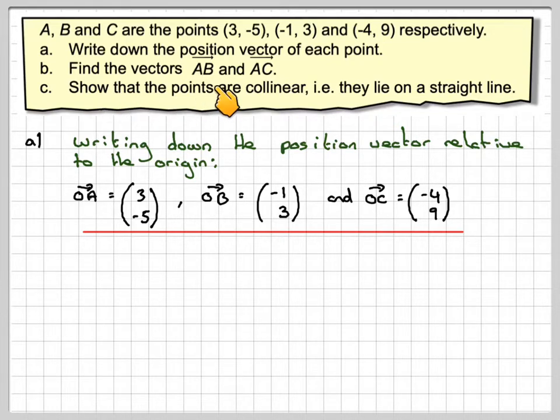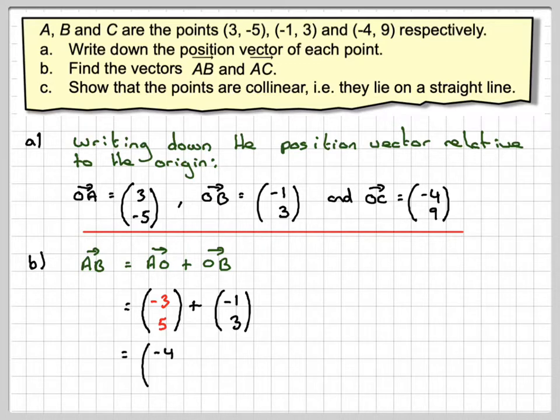Then it says find the vectors AB and AC. So AB is like doing AO + OB. We start with A here and end with B here. So we go back to the origin and then from the origin out to the next vector. If we're going back to the origin, then AO is like doing (-3, 5). And then OB, you write down exactly the same way: (-1, 3). And then you work out -3 plus -1, which is -4, and 5 plus 3, which makes 8. So we've got (-4, 8). Now you could write that as 4(-1, 2).